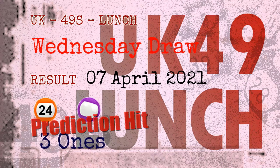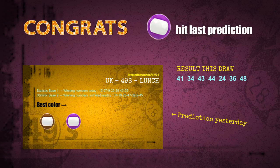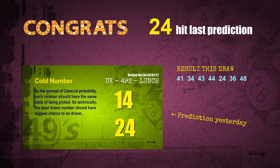Congratulations to friends who bet on three ones, number 24, and purple balls — three ones are hit, purple balls are hit, and number 24 is hit. Congrats to all winners. We will now tell you how to find out the winning numbers for the next draw, step by step.